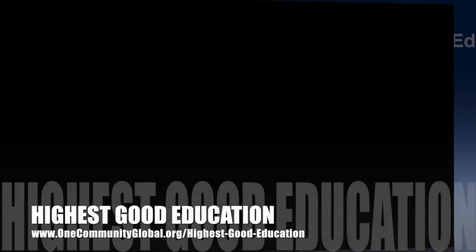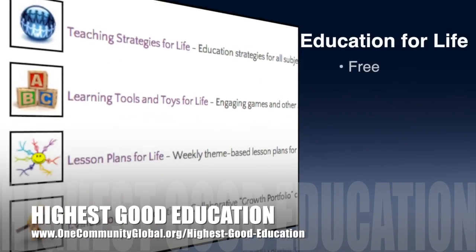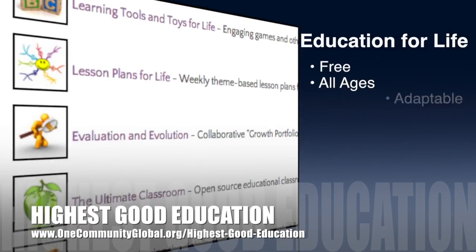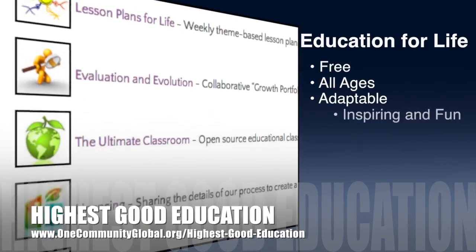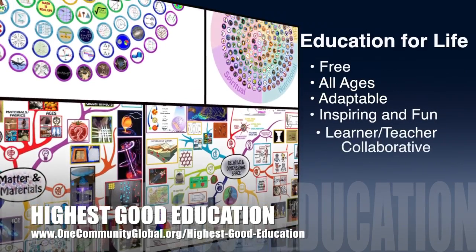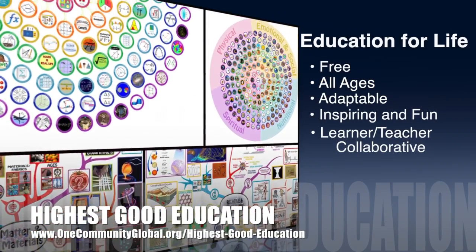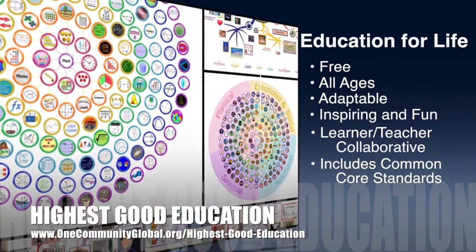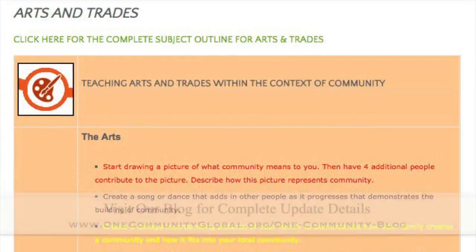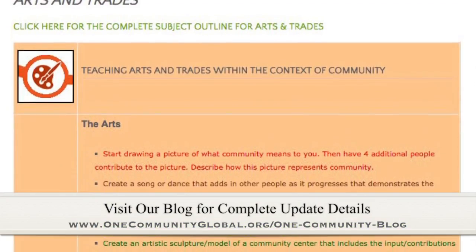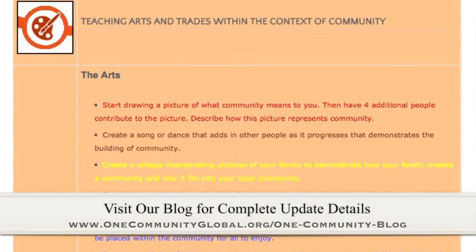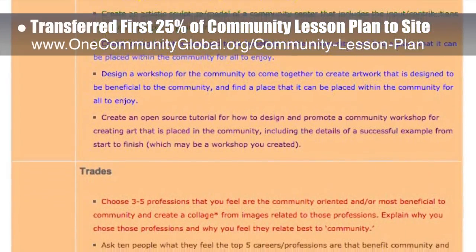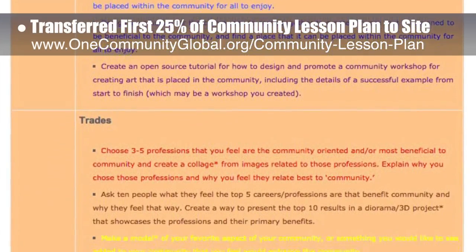OneCommunity's approach to Highest Good Education is open source and free shared, designed for all age groups, adaptable to any schooling environment, inspiring and fun for all participants, a learner-teacher collaborative, and it includes U.S. Common Core standards. This week, the core team — which includes the Pioneer members plus those helping who don't wish to be individually acknowledged — transferred the first 25% of the written content for the community lesson plan to the website.